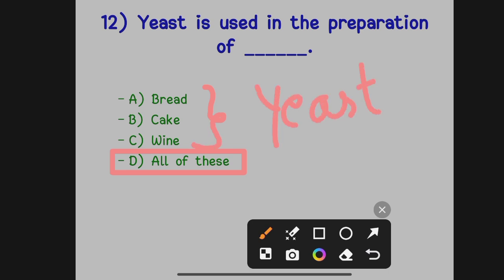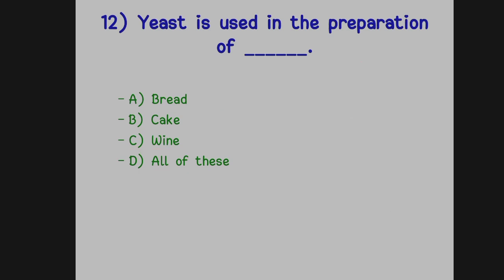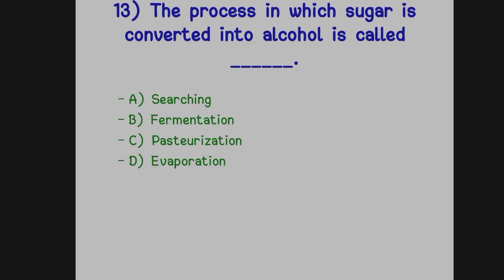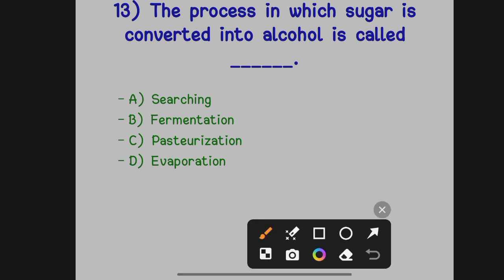The next question: the process in which sugar is converted into alcohol is called dash. Option A: Searching. Option B: Fermentation. Option C: Pasteurization. Option D: Evaporation. The correct answer is Option B, fermentation.